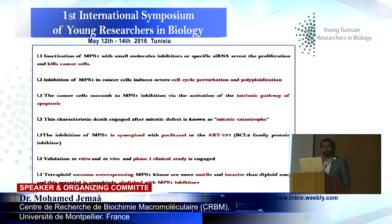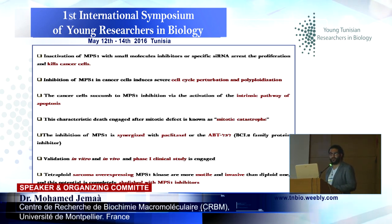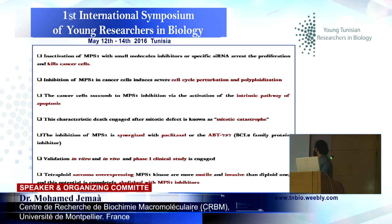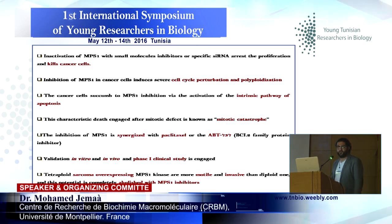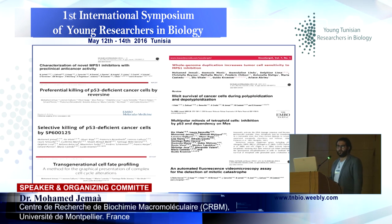So I will conclude. The inactivation of MPS1 with small molecule inhibitors or specific siRNA arrests the proliferation of cancer cells, and this inhibition induces cell cycle perturbation and polyploidy. Cancer cells succumb to this inhibition via activation of the intrinsic pathway of apoptosis — especially mitotic catastrophe — and this inhibition is synergized with taxol or ABT, which are BCL2 family protein inhibitors. These results are validated in vitro, in vivo, and also in a phase one clinical study. Tetraploid sarcoma cells that overexpress MPS1 kinase are more motile and invasive than diploid ones, and this potential is completely abolished when we inhibit MPS1 with several inhibitors.